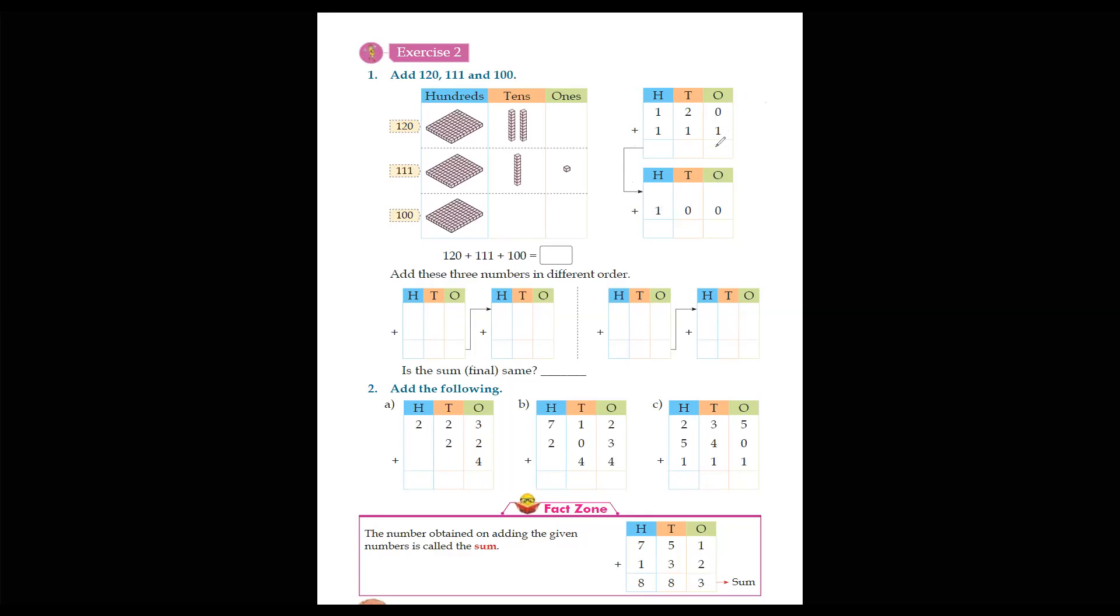We have to add 120 and 111. The answer will come. Look at the arrow, so the answer will be added here. Let's go. 0 and 1, what will happen? 1. 2 plus 1 is equal to 3. 1 plus 1 is equal to 2.